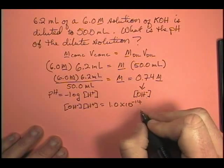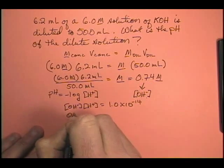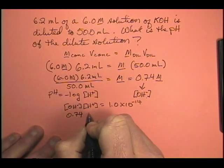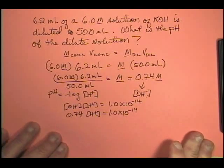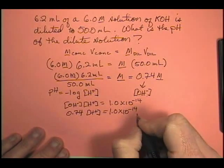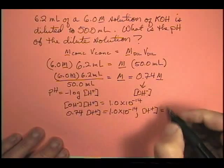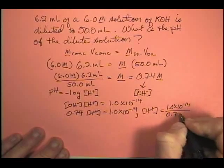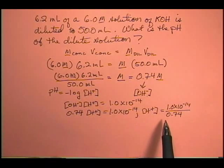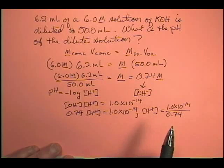We can rearrange this. We know the hydroxide ion concentration is 0.74, so: 0.74 molar times the hydrogen ion concentration equals 1.0×10⁻¹⁴. So the hydrogen ion concentration equals 1.0×10⁻¹⁴ divided by 0.74. Before continuing — what should my hydrogen ion concentration be? This is a base, so I expect a hydrogen ion concentration less than 1.0×10⁻⁷, something smaller than 10⁻⁷.